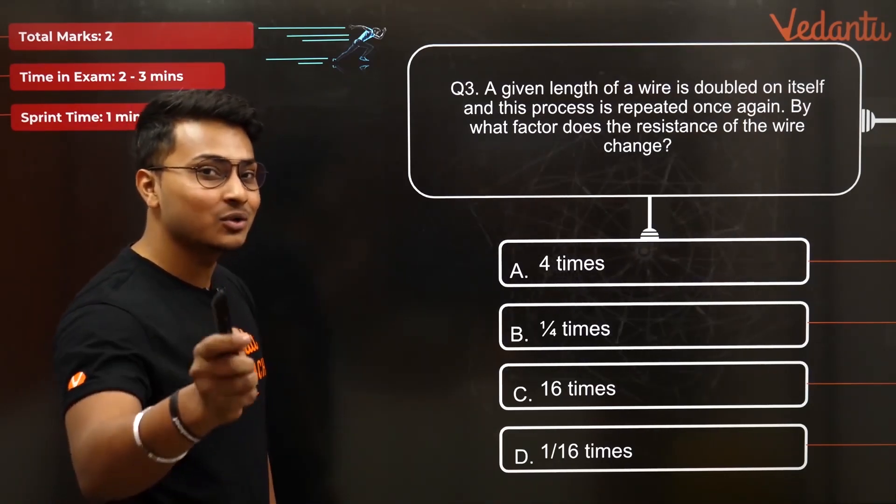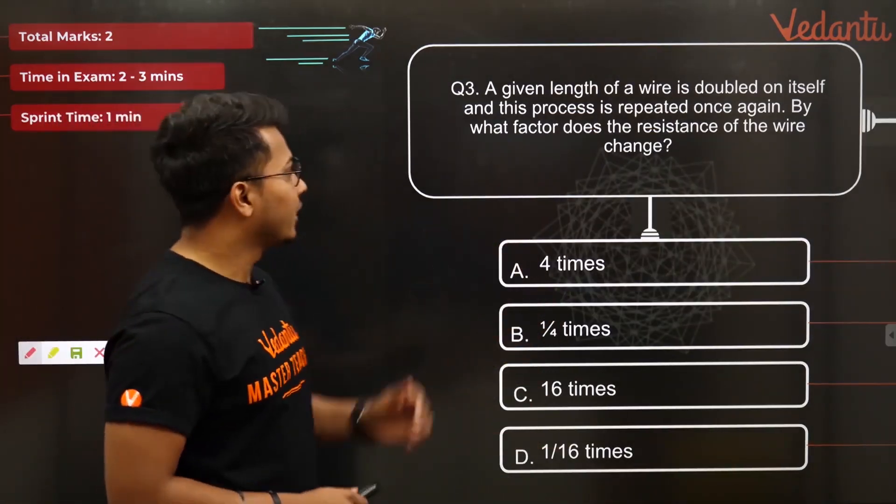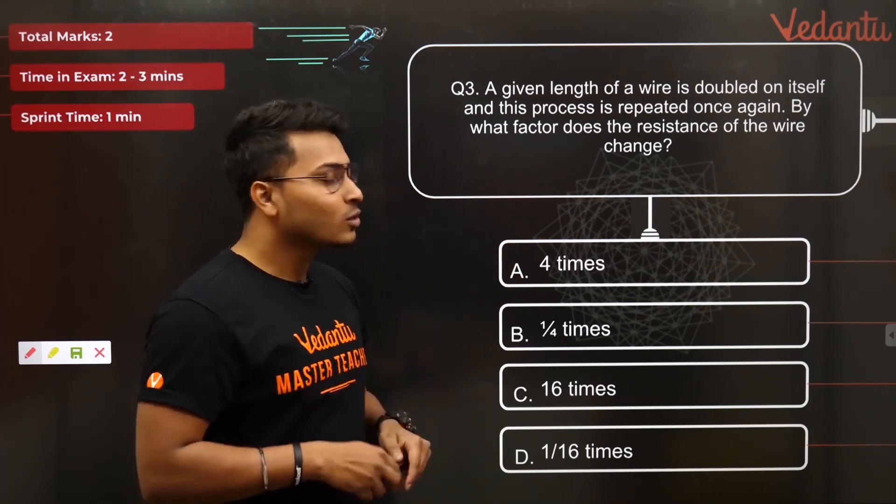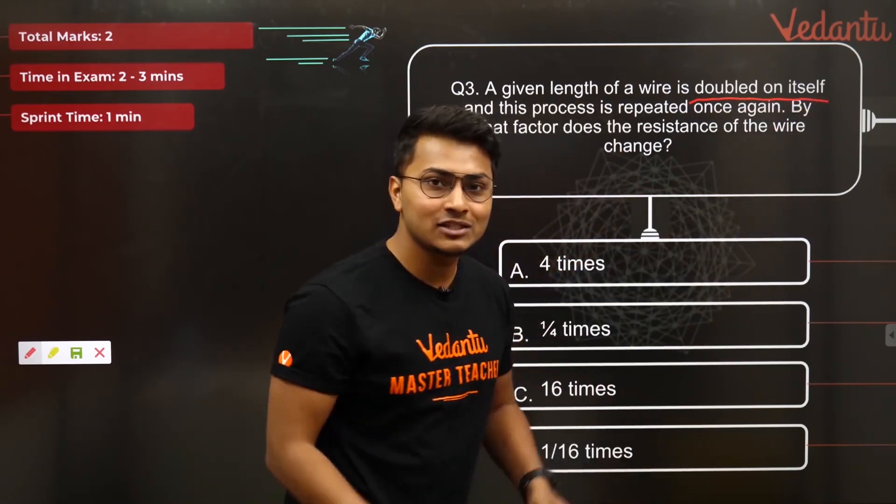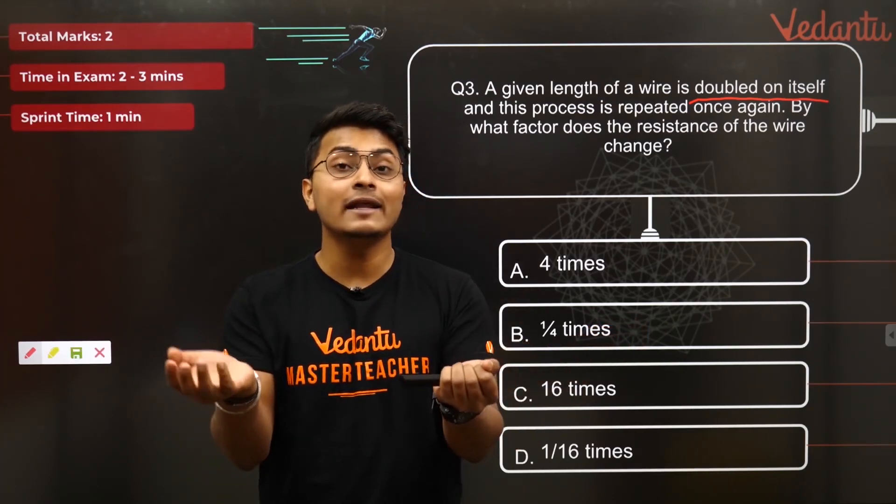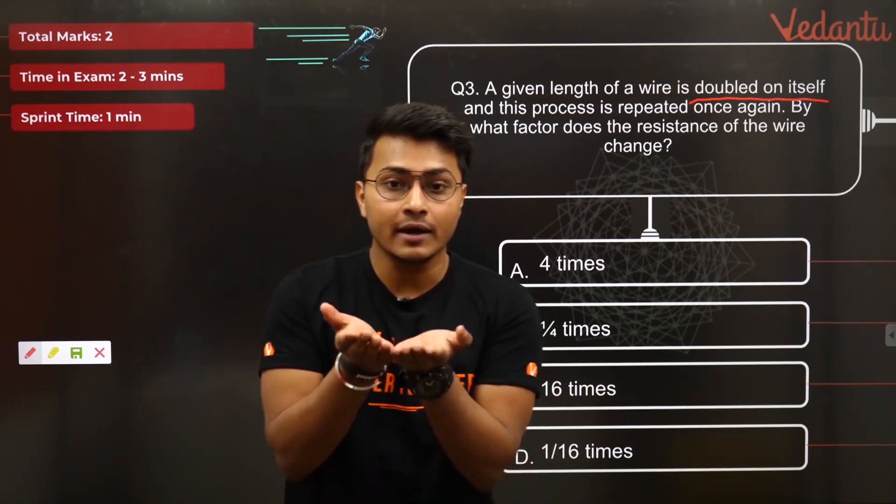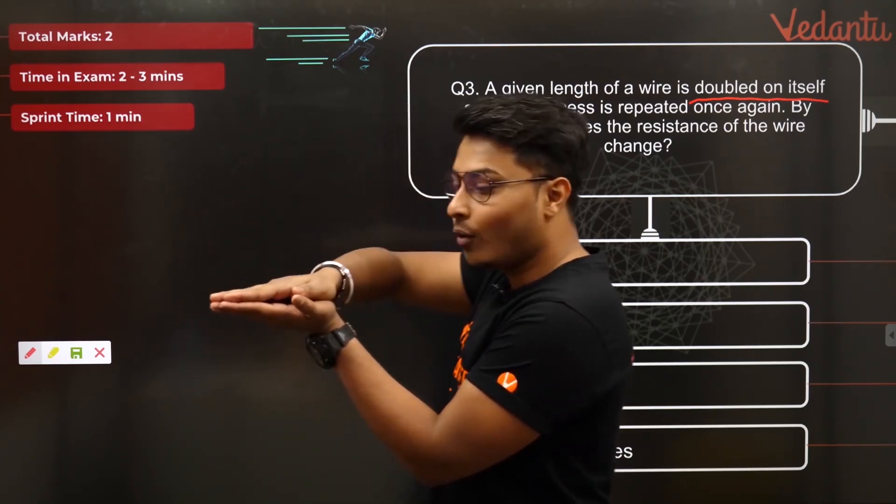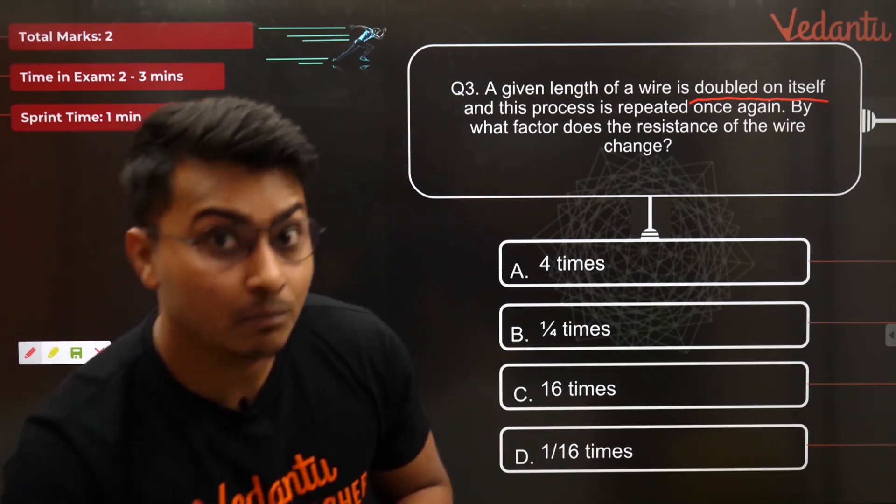I could see a lot of amazing answers onto the chat already. So now we'll do this. Let's see what's going on. Everyone here, concentrate. Let's freeze it. A given length of wire is doubled on itself and this process is repeated once again. So first of all, you need to understand what do you mean by doubled on itself. It's not that this is the wire and it got doubled. No, it was doubled on itself. If this was the wire, it got doubled on itself. It just got folded, my dear friends. That's what happens. So the previous wire was like this, and it just got folded.